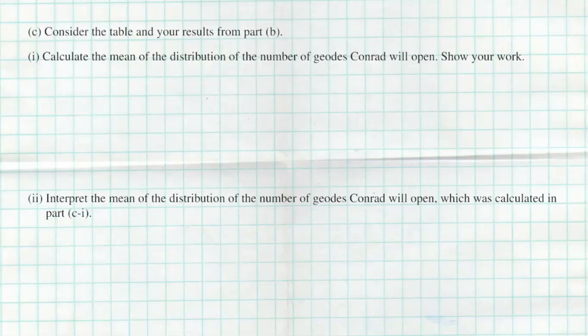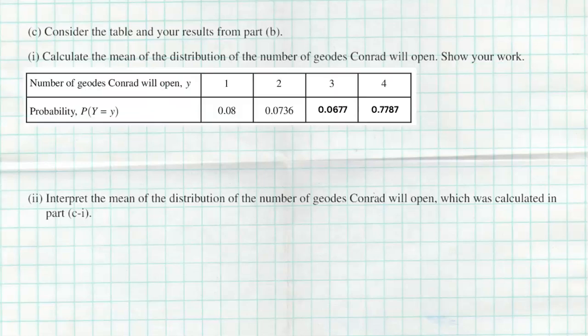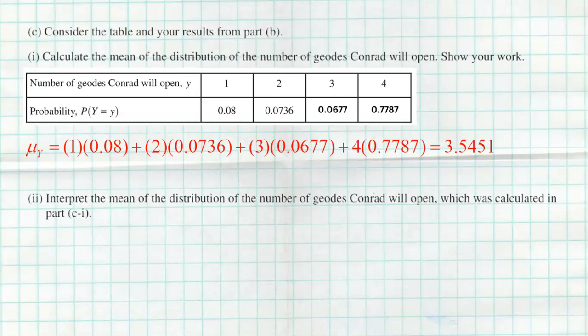The next question says: consider the completed table and calculate the mean of the distribution of the number of geodes Conrad will open — show your work. To find expected value, multiply each outcome by its probability and add them all together. So: 1 × 0.08, plus 2 × 0.0736, plus 3 × 0.0677, plus 4 × 0.7787. Add all that together and we get 3.5451 geodes.